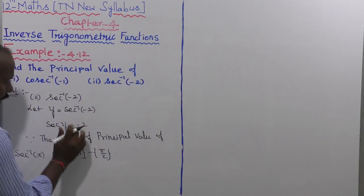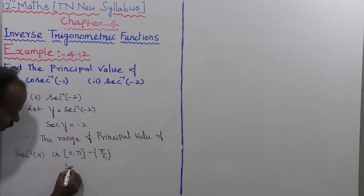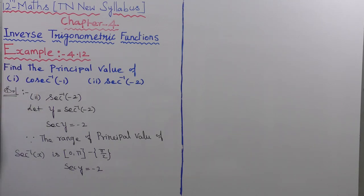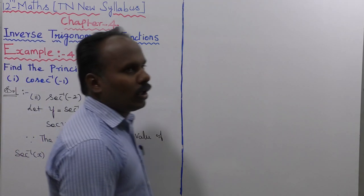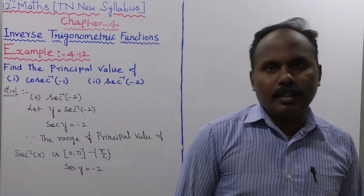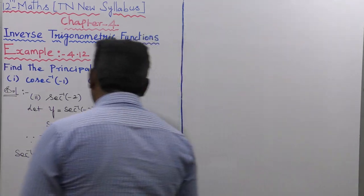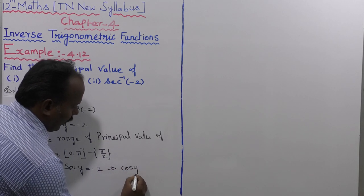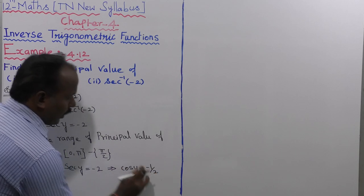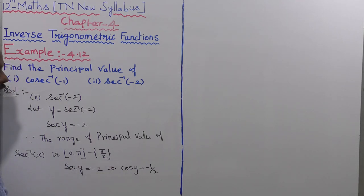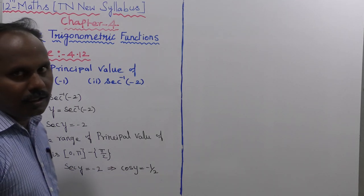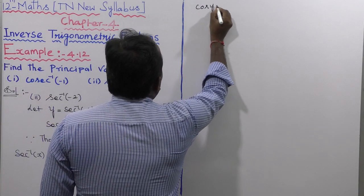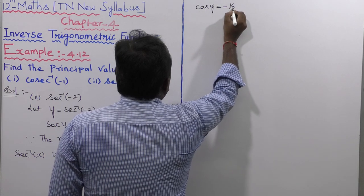Now, looking at the values of sec y: sec y equal to minus 2. The reciprocal of secant is cosine, so sec y equal to minus 2 implies cos y equal to minus 1 by 2.